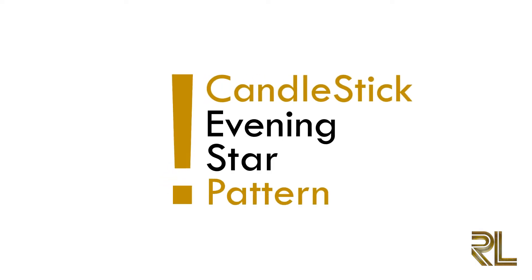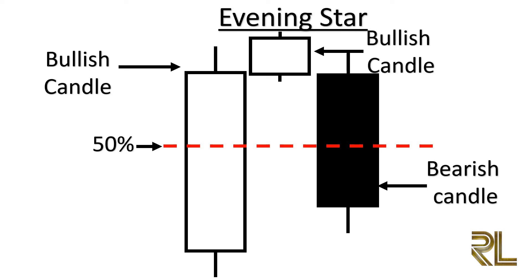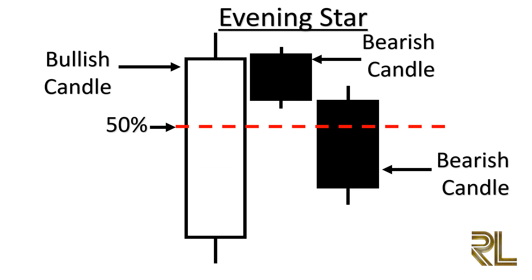The evening star pattern is a bearish reversal pattern that usually occurs at the top of an uptrend, consisting of three candlesticks. The first candle is bullish; the second is a small candlestick — bullish, bearish, or a doji; the third is a large bearish candle. The evening star is essentially the bearish version of the morning star pattern.